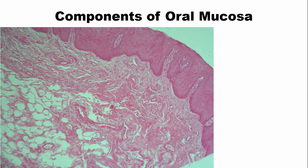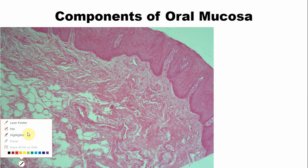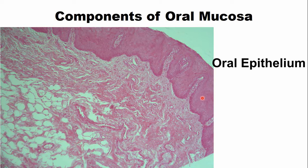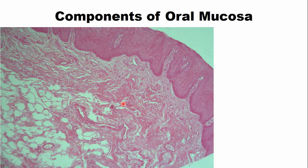This is the histological slide of the oral mucosa. This part of the oral mucosa is the oral epithelium, which comprises various layers of cells. This part is referred to as the connective tissue, also known as the lamina propria. This whole area is the connective tissue component.